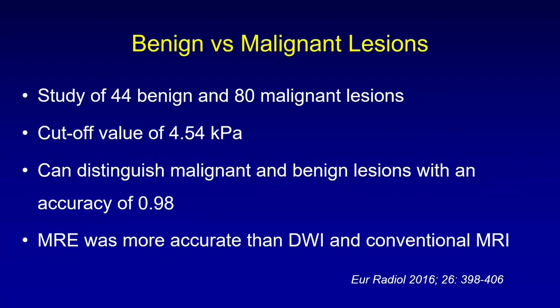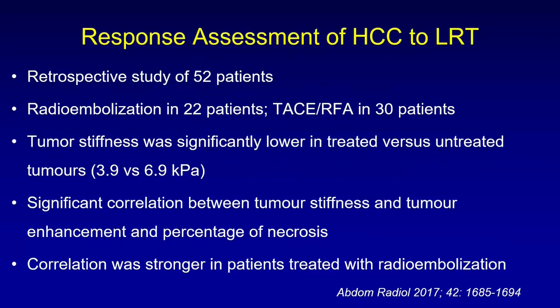Regarding benign versus malignant lesions, a study of 44 benign and malignant lesions found that a cutoff value of 4.54 kPa can distinguish malignant from benign lesions with 98% accuracy. MRE was more accurate than diffusion-weighted imaging and conventional MRI. In a retrospective study of 52 patients assessing SCC response to locoregional therapy — 22 with radioembolization and 30 with TACE or RFA — tumor stiffness was significantly lower in treated versus untreated tumors, with significant correlation between tumor stiffness, tumor enhancement, and percentage of necrosis.